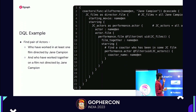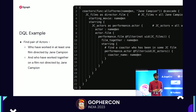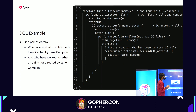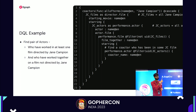Line two finds Jane Campion in the database. Line three finds all films Jane Campion has directed. Line five finds all actors who acted in those movies — this is the first join in SQL, a graph traversal here. Line eight finds all films those actors have done. Then we find their co-actors, but in line nine we exclude films directed by Jane Campion, which we already found. So this is a very complex query that you can write simply in DQL — and that's how DGraph works.